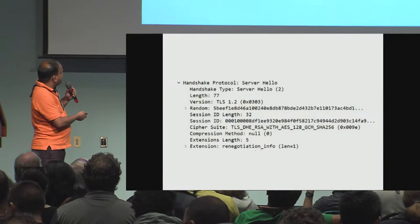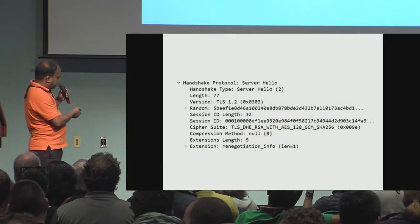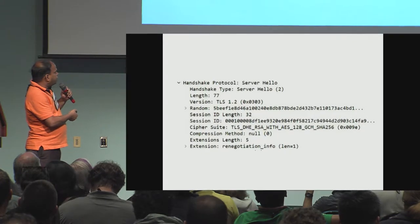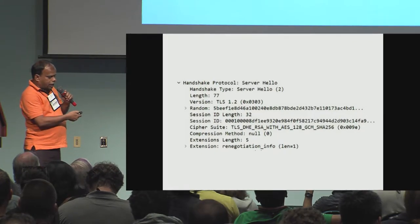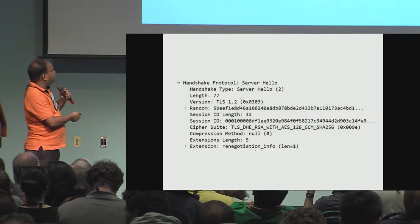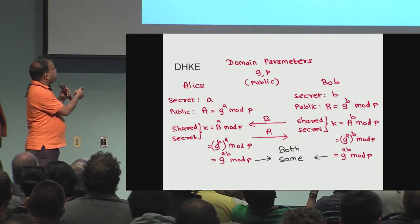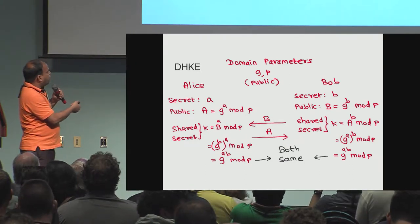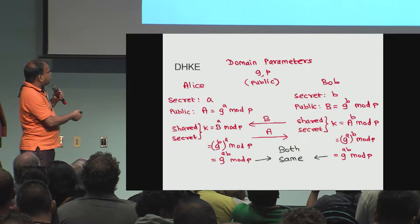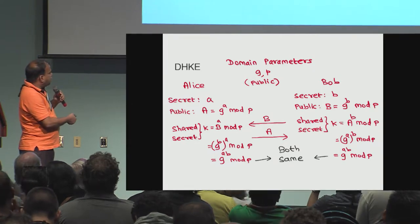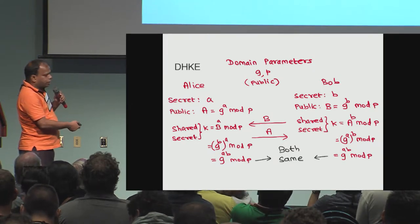Upon further investigation, I noticed that it always happens only when I use Diffie-Hellman ephemeral. It doesn't happen if I use ECDHE, for example. As you all know, Diffie-Hellman typically has common domain parameters, then both parties exchange their public key and calculate the shared secret, and both parties end up with the same shared secret.